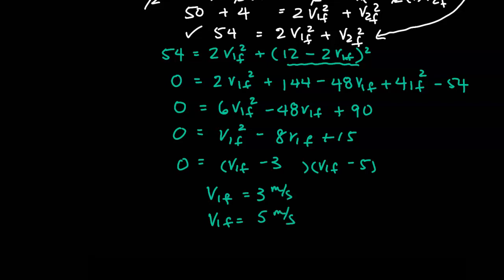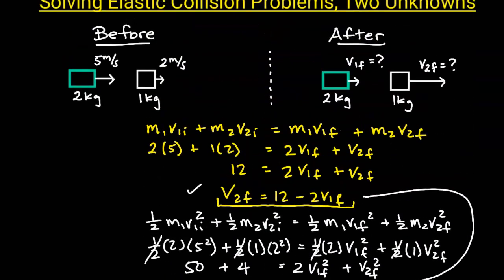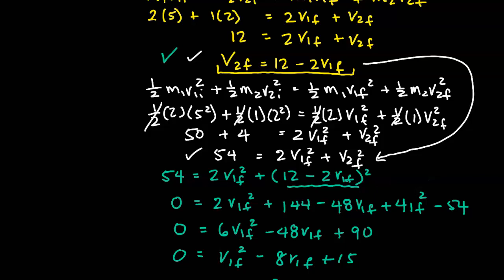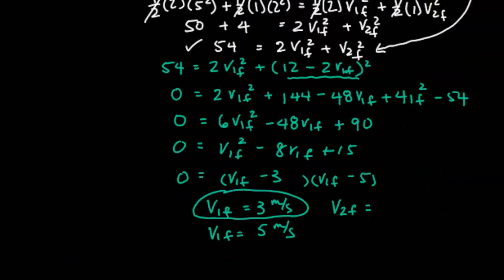Why do I have two different solutions? One solution is for before the collision and the other is for after the collision. Going back to our problem, before the collision object one had a velocity of 5 m/s, so after the collision it's going to be the other value: 3 m/s. To find v2_final, we substitute 3 back into our bracketed equation. 3 squared is 9... 12 minus 6 is 6, so v2_final equals 6 meters per second.